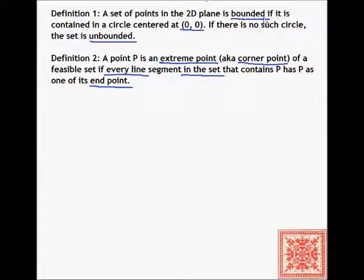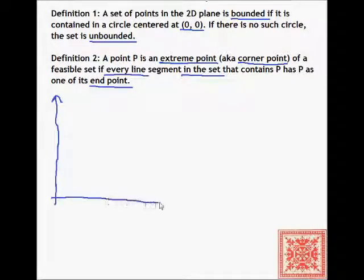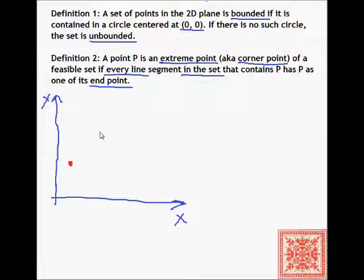If there is no such circle, then the set is unbounded. Definition two: a point P is an extreme point, also known as a corner point, of a feasible set, if every line segment in the set that contains P has P as one of its endpoints. Let's illustrate these two definitions with a couple of examples.